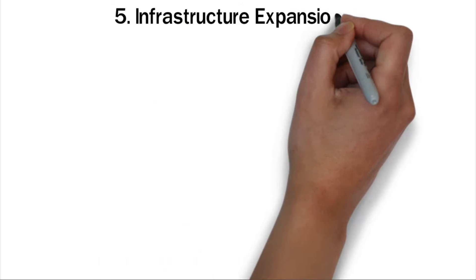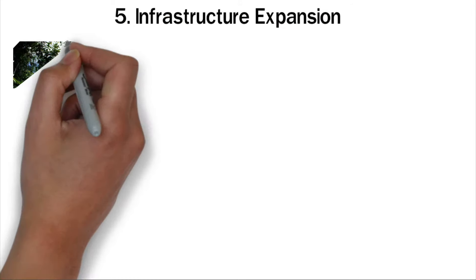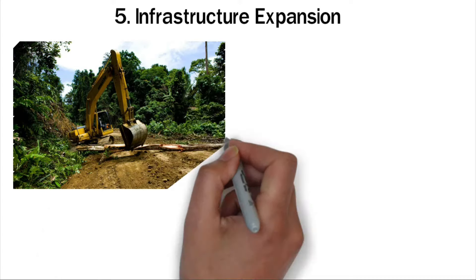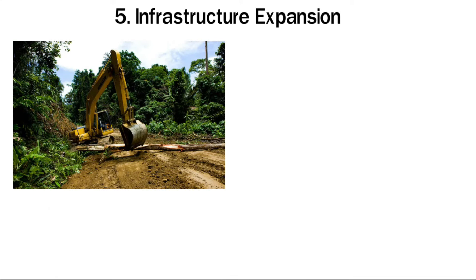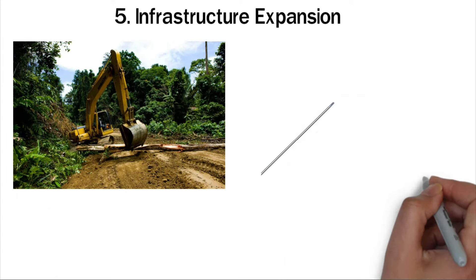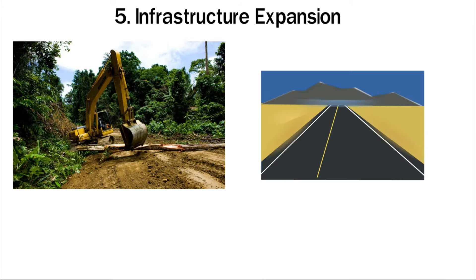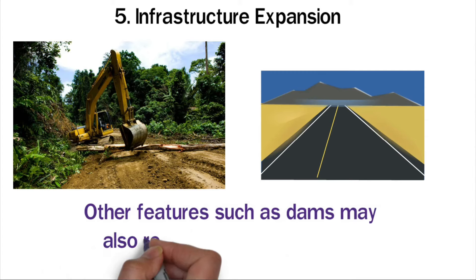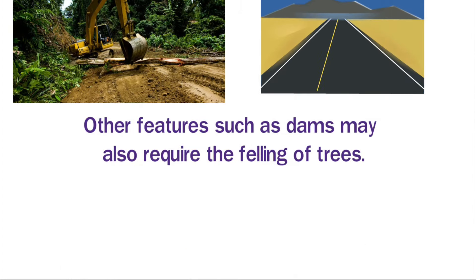Five: Infrastructure expansion. Due to urbanization, trees have to be cut to make room for buildings. Trees are also cut down when constructing roads. Roads that pass through or near forests can cause massive deforestation in a given area. Other features such as dams may also require the felling of trees.